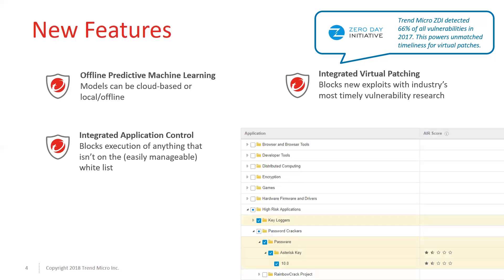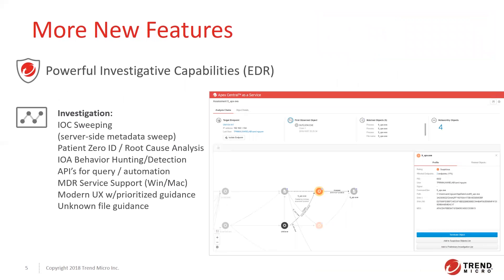We have integrated application control, which is very easily manageable. You can place it on either a whitelist — whitelisting specific applications and locking down everything else — or you can have everything installable and maintain a blacklist blocking specific categories or applications you don't want installed. We also have new powerful EDR capabilities built in, including IOC sweeping, patient zero identification, root cause analysis, and APIs to perform those sweepings.